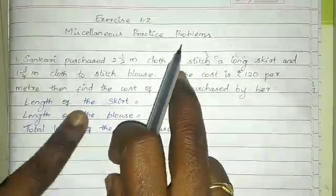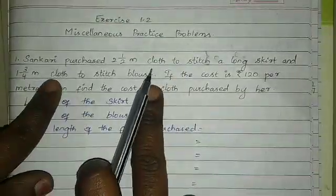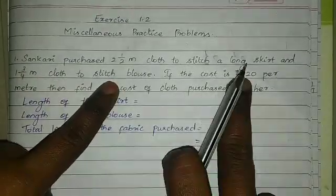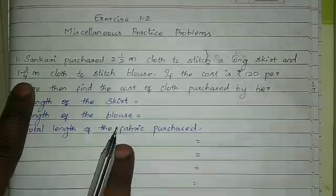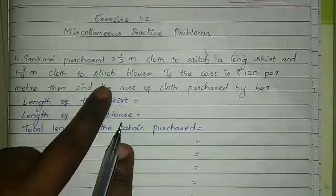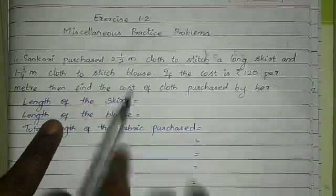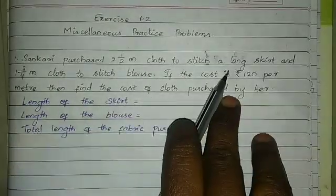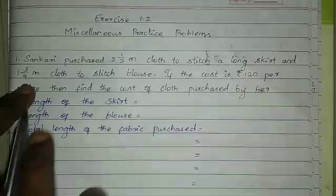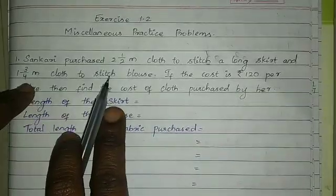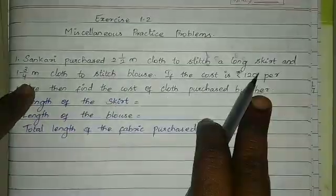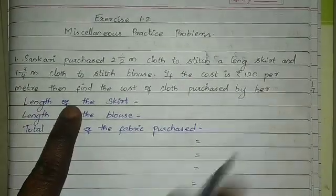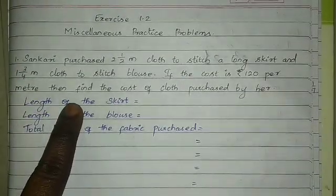Exercise 1.2, Mr. Nana's Practice Problems. Sankari purchased 2.5 meters of cloth to stitch a long skirt and 1¾ meters of cloth to stitch a blouse. If the cost is ₹120 per meter, find the cost of the cloth purchased by her.